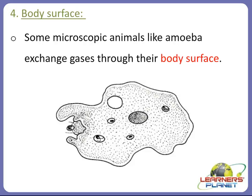Frogs also breathe through lungs — as we discussed, adult frogs breathe through lungs when on land. So frogs and earthworms breathe through their moist skin, but frogs also have lungs as an additional organ for breathing.